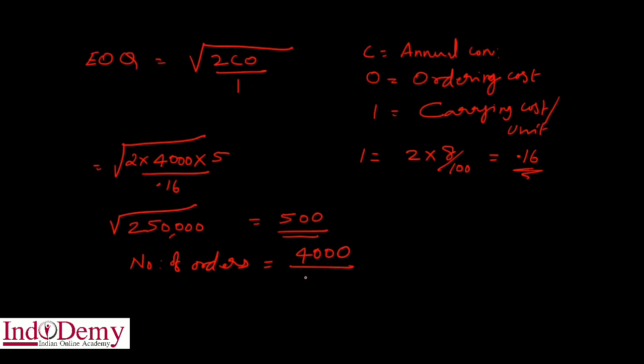divided by EOQ. So 4000 divided by 500 equals 8 orders. Number of orders to be placed in a year is 8 orders.